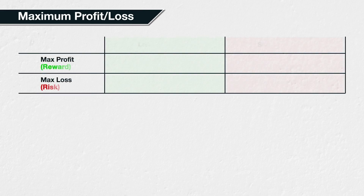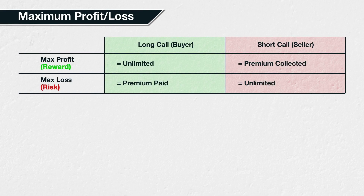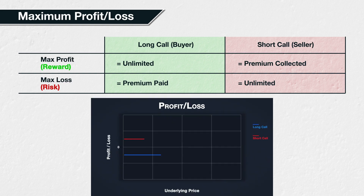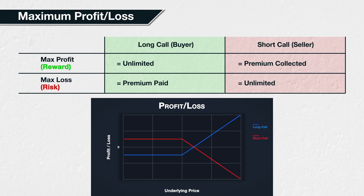As well as being able to calculate the profit or loss for a specific value, it's also useful to know the maximum profit or loss of any option position you're thinking of opening. In particular, it's useful to know if your profit or loss is limited or unlimited. For the call option buyer, their profit continues to increase for every dollar increase in the underlying price. Because of this, their maximum profit is theoretically unlimited — or undefined, since an asset price will not go to infinity, but it can be very large.